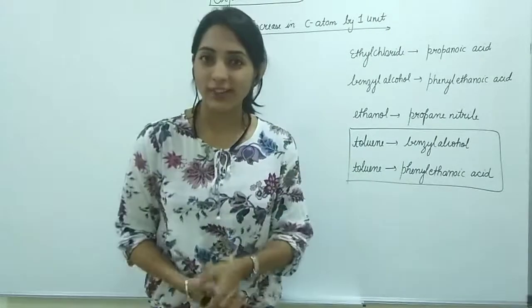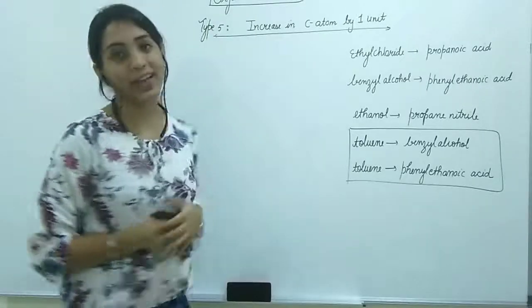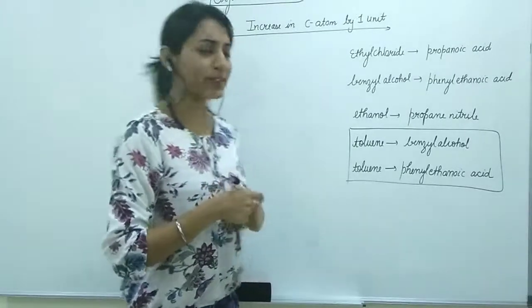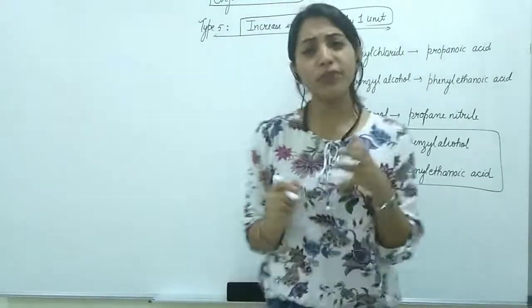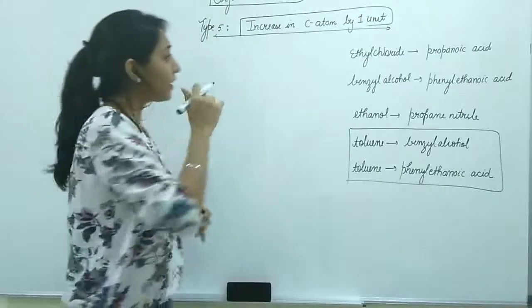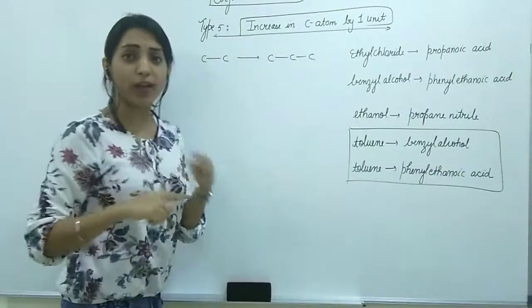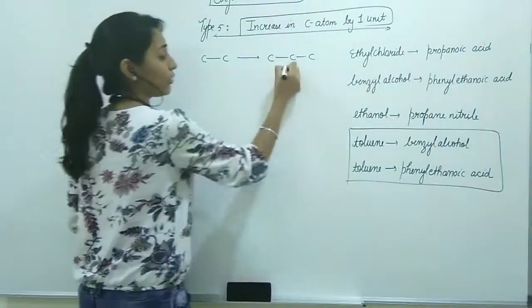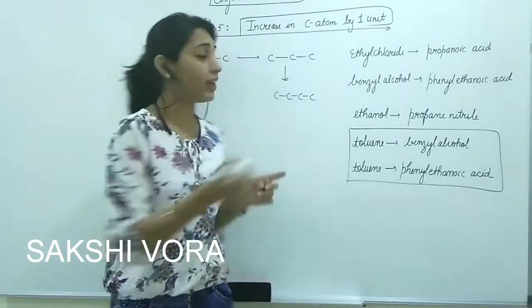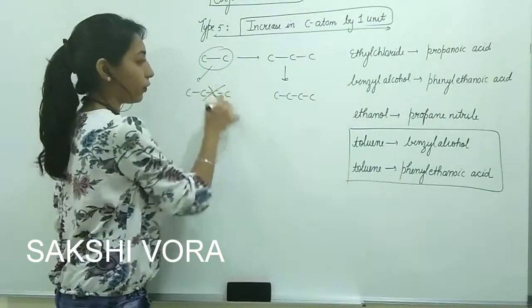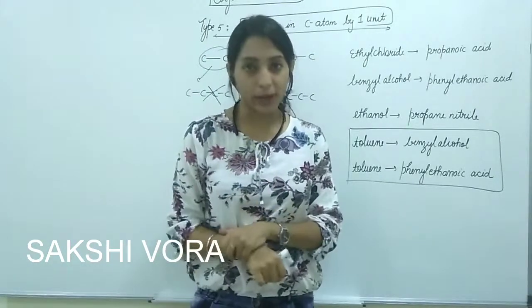Hey guys, welcome back to the video. Today we're discussing type number five for organic reactions: increasing the number of carbon atoms by one unit. For example, if you start with a compound with two carbon atoms and need to go to three, or from three to four. I'm not talking about doubling the chain size from two to four or three to six, just increasing by one carbon atom.